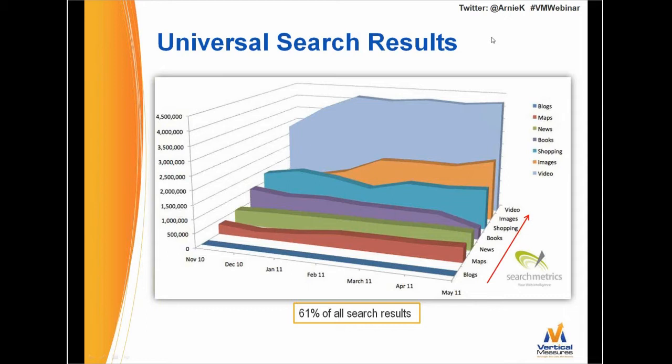Universal search results were rolled out by Google about three years ago, and they keep getting more and more universal. A study done about a year ago shows how many different types of content now appear in Google's search results. 61% of all searches result in a universal search result — blogs, maps, news, books, shopping, images, video. My recommendation throughout this presentation is to create a lot of different kinds of content to increase your odds of showing up in different types of search results.